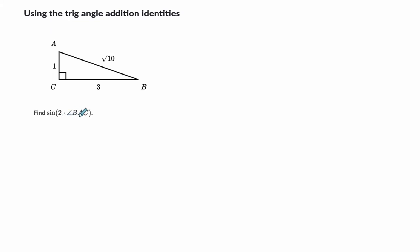Find the sine of twice angle BAC, so BAC is here, so we'll call this angle x. So this is another double-angle formula, so the sine of 2x as a double-angle formula would just be twice the sine of x times the cosine of x. And that would be what? The sine of x is 3 over radical 10. It's opposite over hypotenuse, so 3 over radical 10.